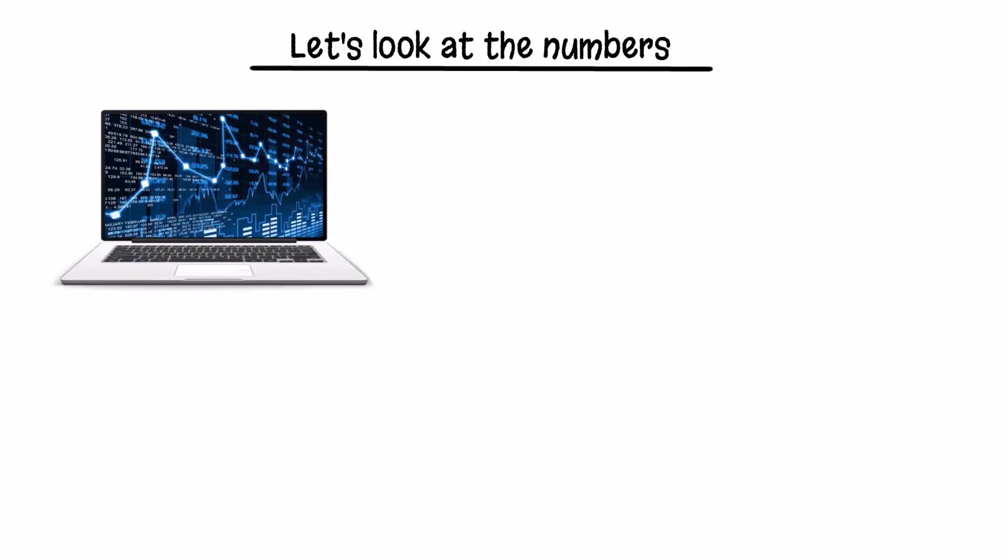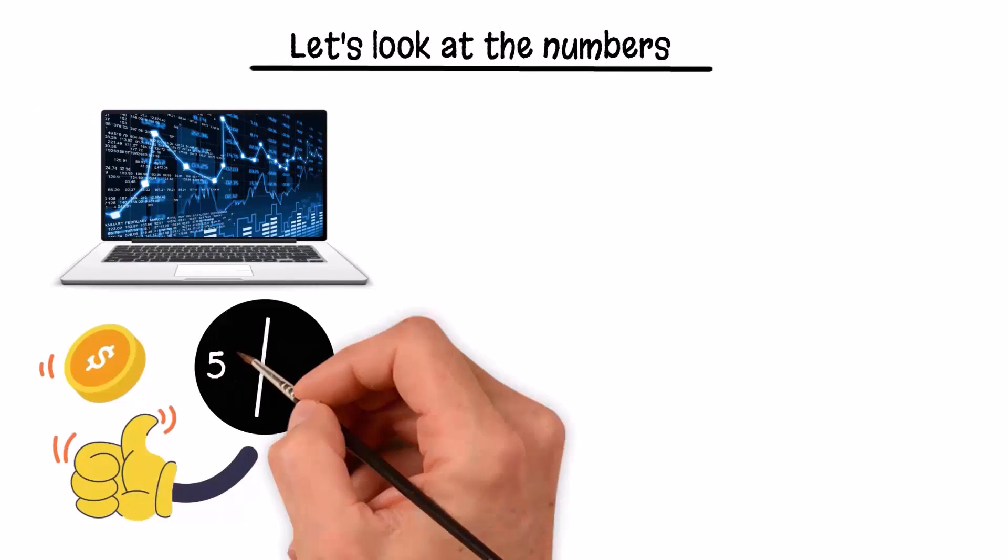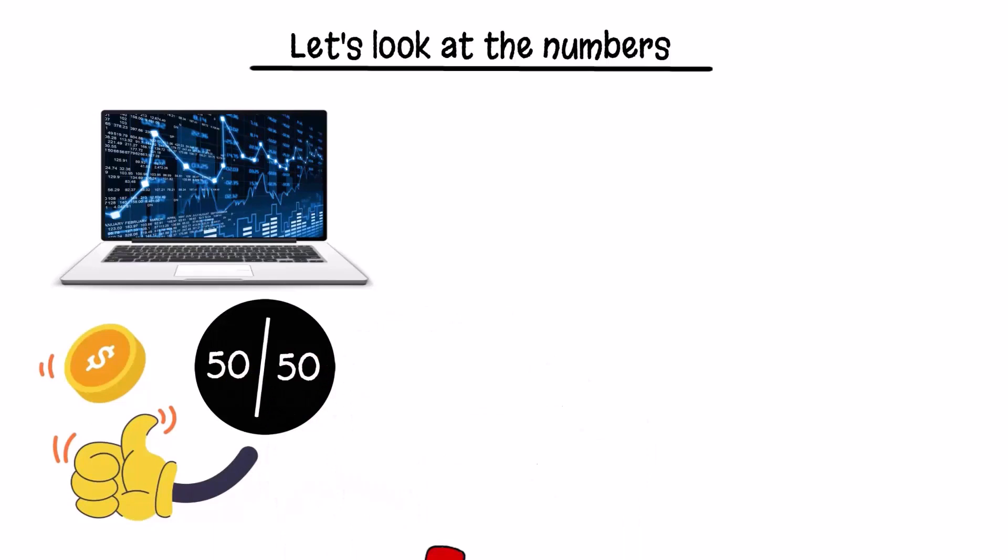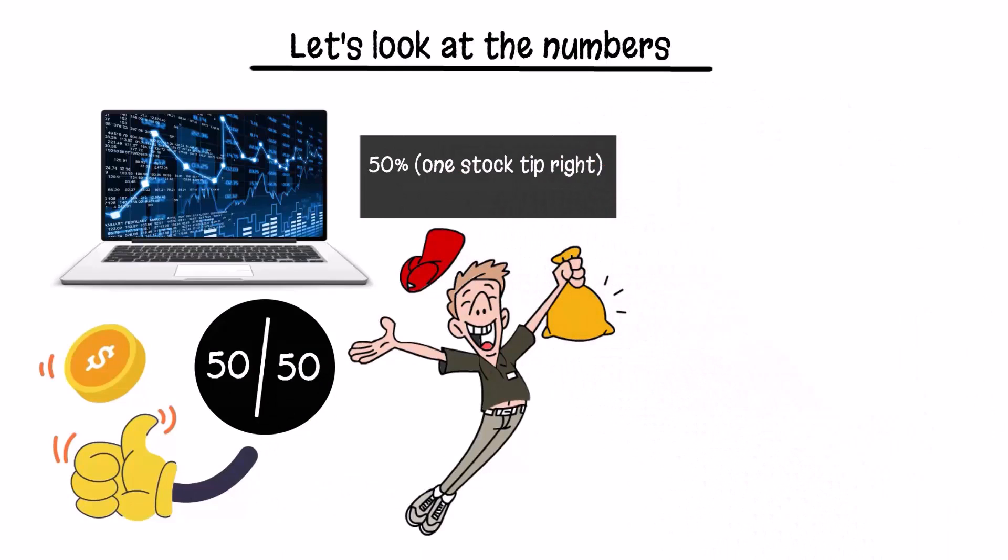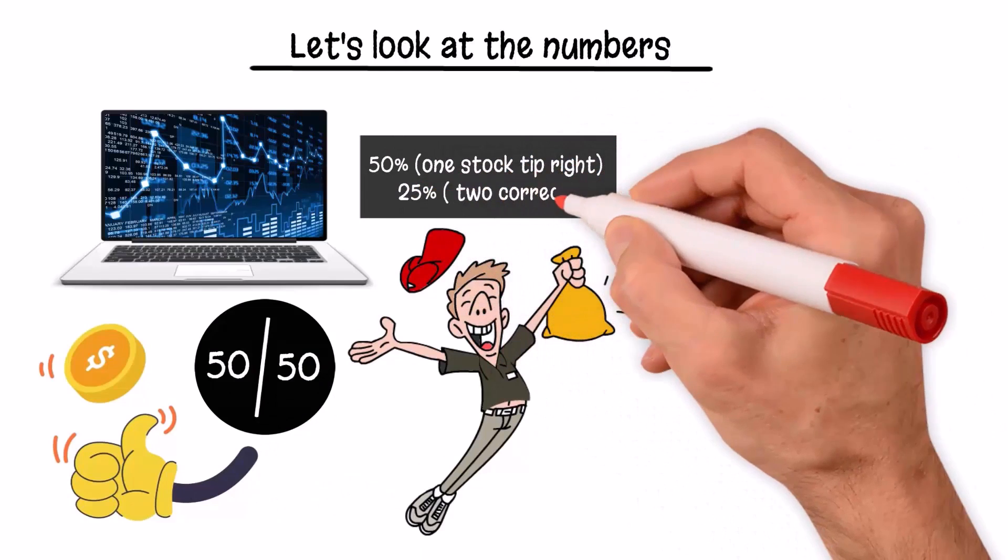Let's look at the numbers. If we assume that the stock market randomly fluctuates, then the probability is similar to a coin toss, or 50/50. Therefore, the broker has a 50% chance of getting one stock tip right, then 25% of getting two correct, and so on.